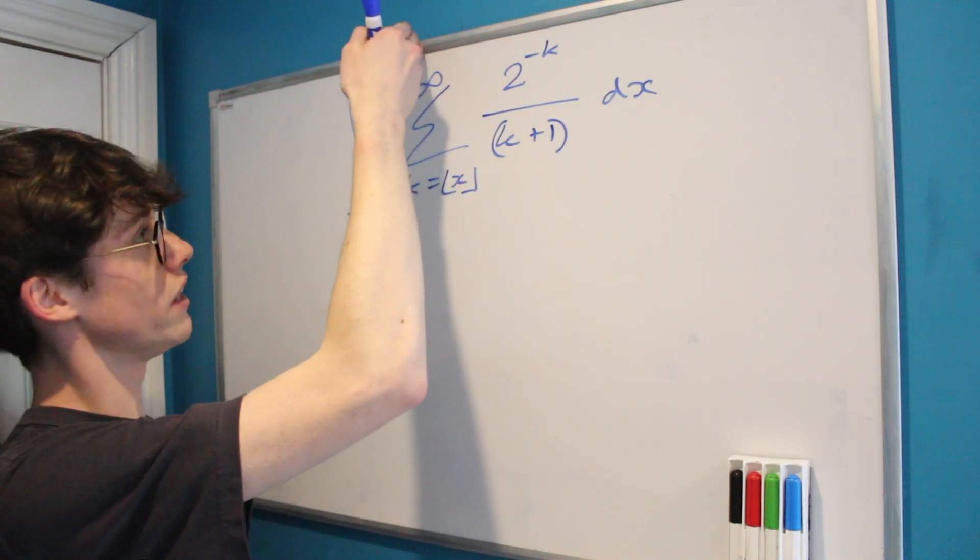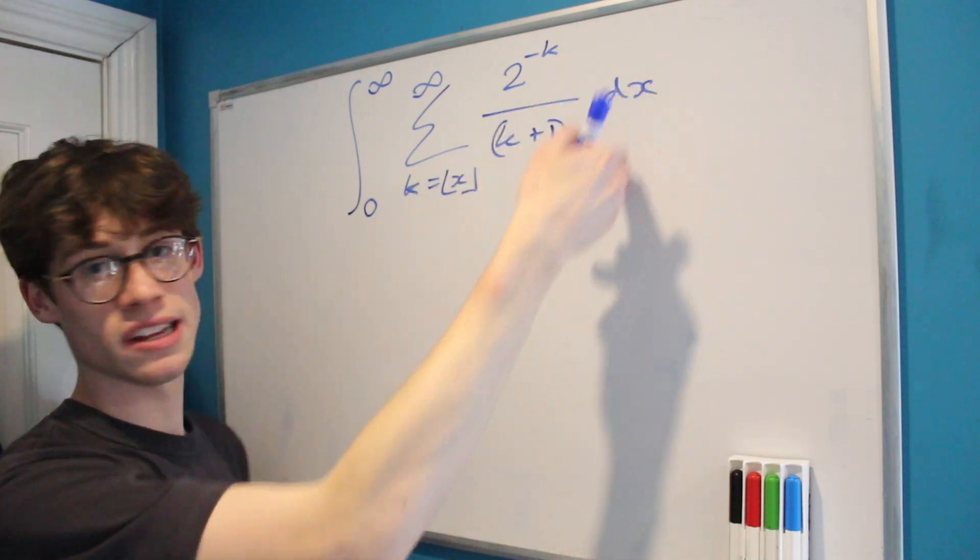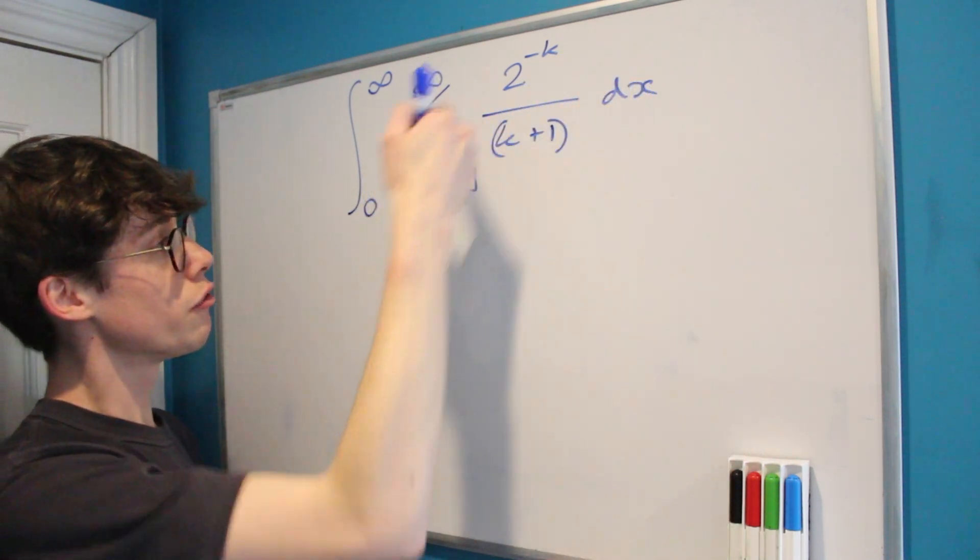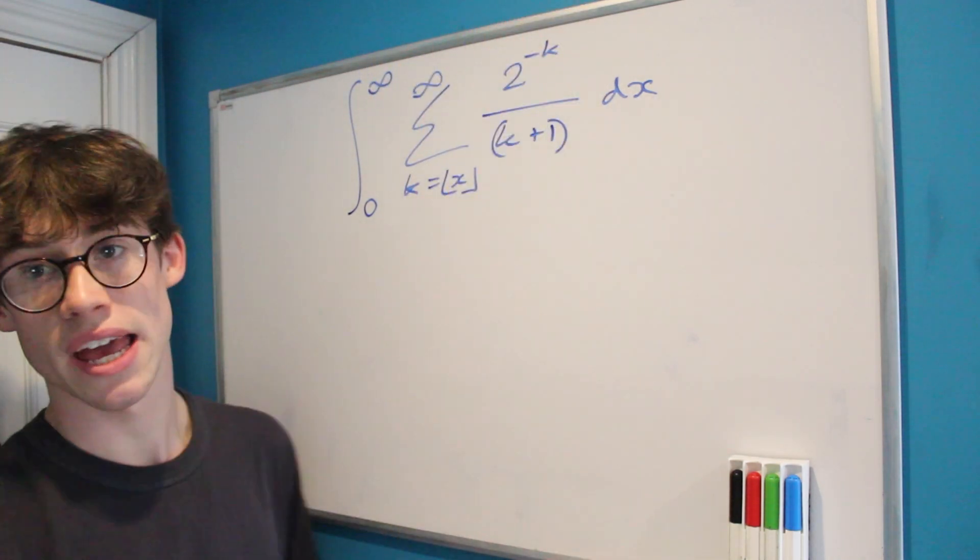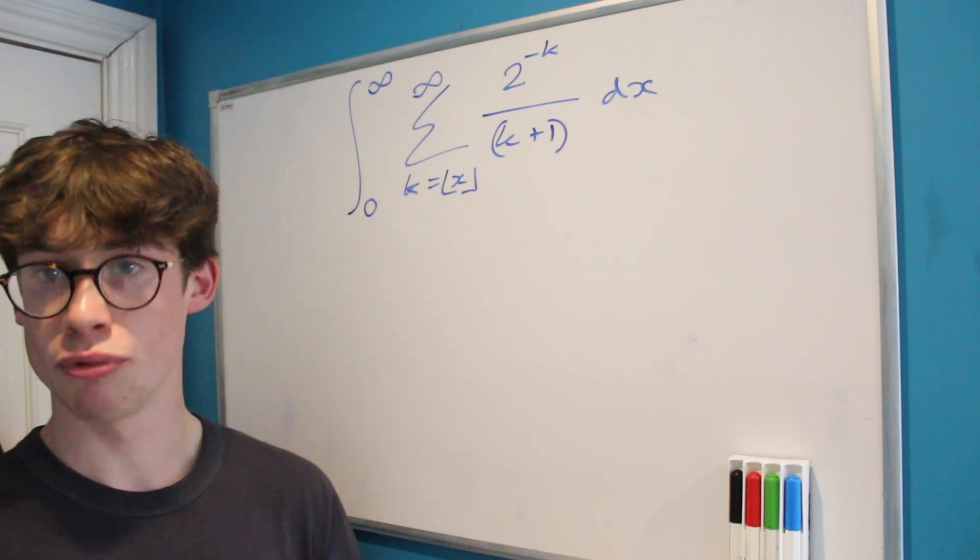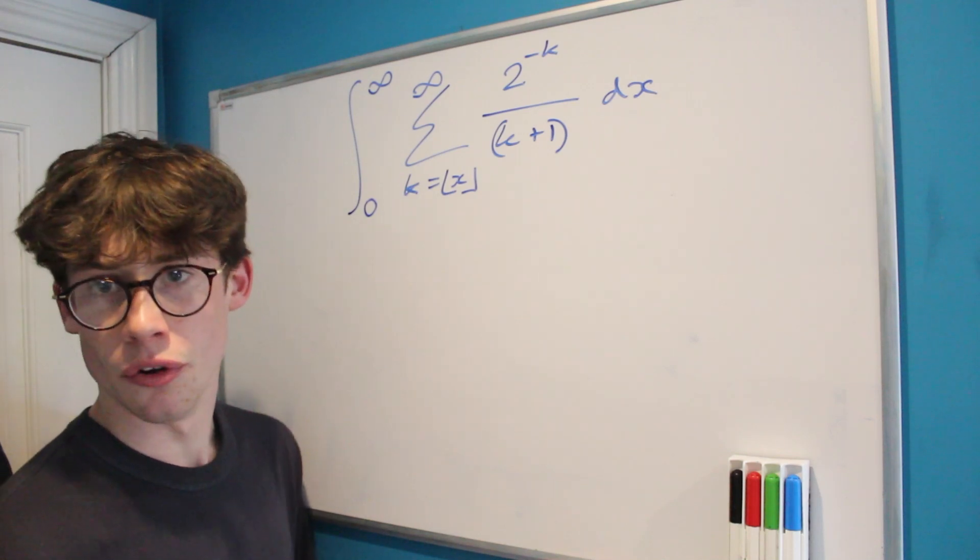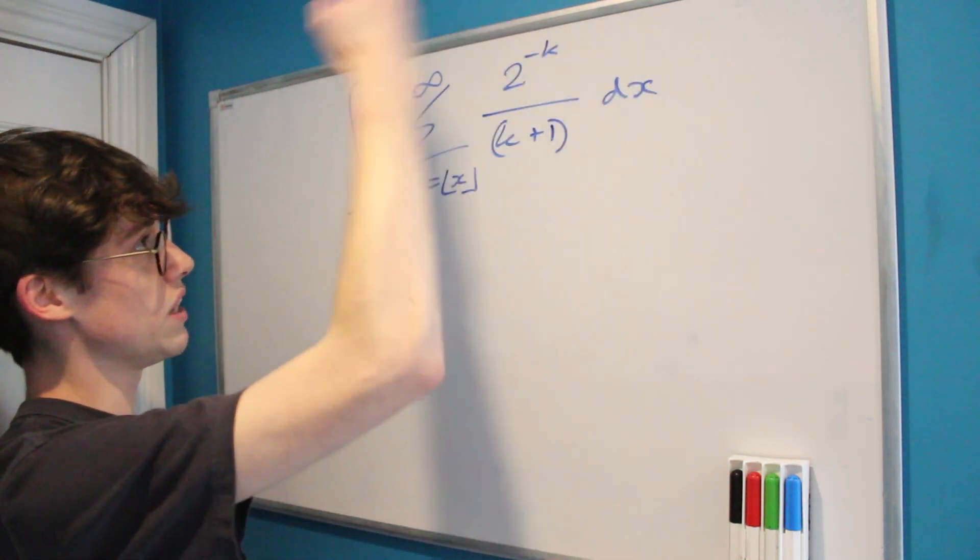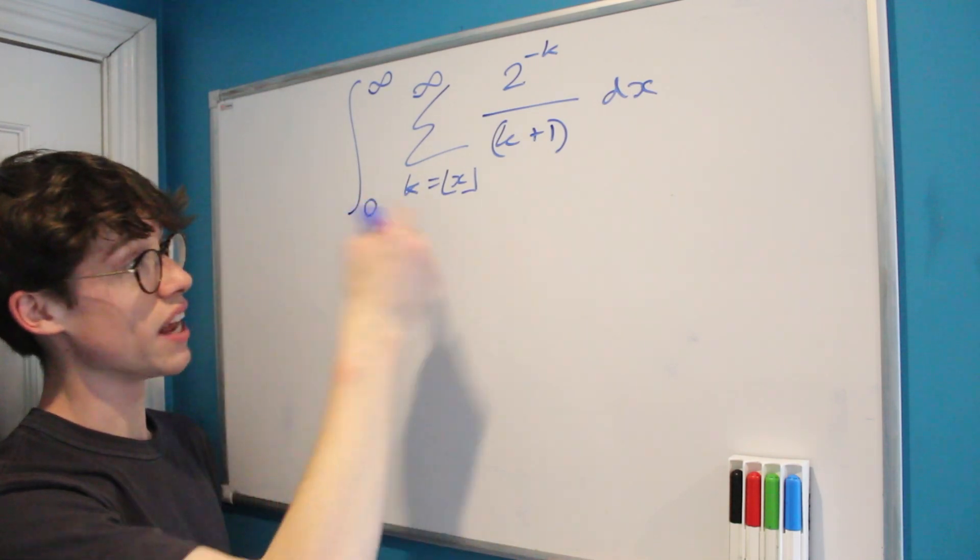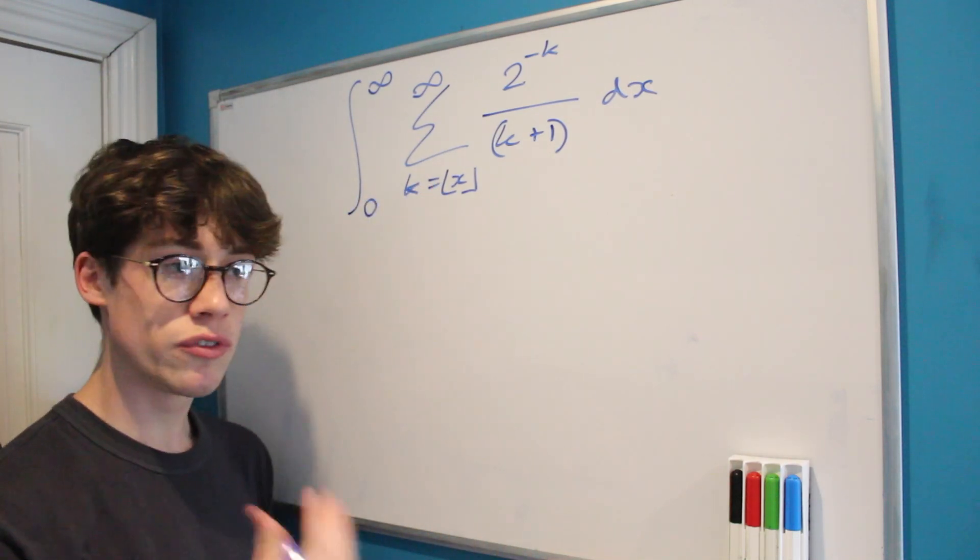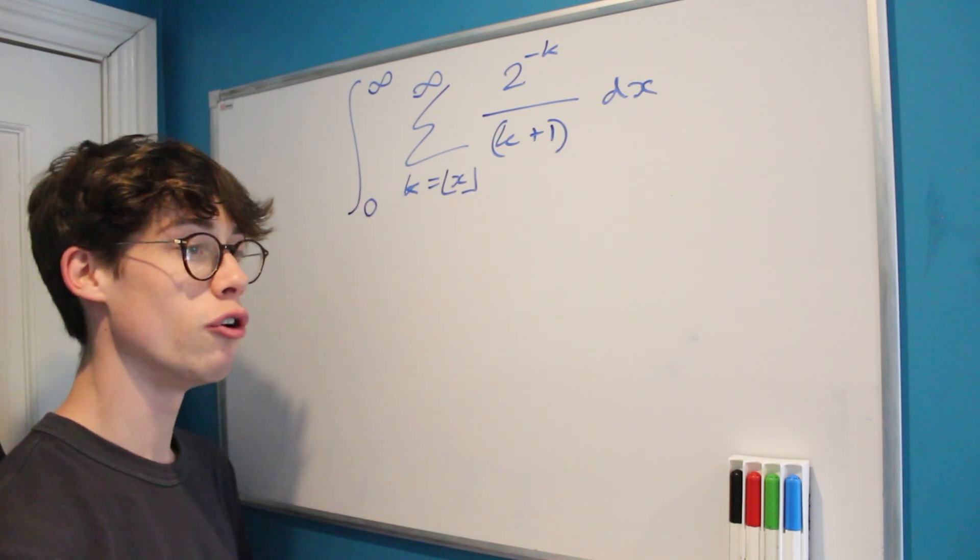We're looking at the integral from 0 to infinity of the sum from k equals floor of x (where x is the variable we're integrating with respect to) from floor of x to infinity of 2 to the negative k divided by k plus 1. So let's try and get our head around what the problem is actually asking us. Firstly, we're integrating a sum, which is odd, and the only x that we can see here is within the bounds of the sum itself. We're starting at floor of x, and so we've got to find a way to rewrite this that makes more sense to us.